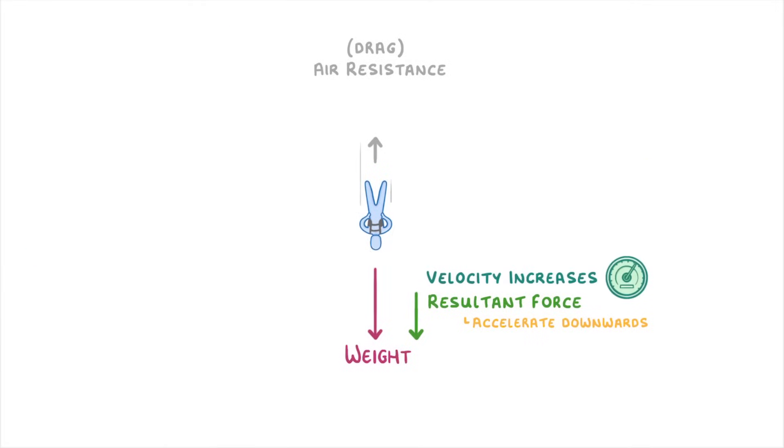As the person's velocity increases though, the force from the air resistance will increase as well. Because remember they'll be colliding with more particles, which increases the air resistance. And because their weight is constant, this means that the resultant force will decrease by the same amount as the air resistance has increased. So although they continue to accelerate downwards, the rate of acceleration will fall.